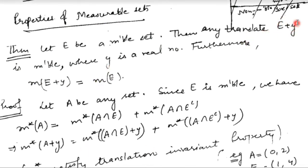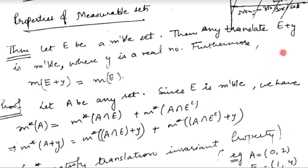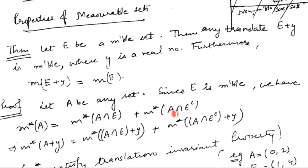What we want to show is that E plus y is measurable, meaning for any set A, the outer measure of A is the same as the outer measure of A intersection (E plus y) plus the outer measure of A intersection (E plus y) complement. What is given to us is that E is measurable, meaning for any set A, the outer measure of A equals the outer measure of A intersection E plus the outer measure of A intersection E complement.